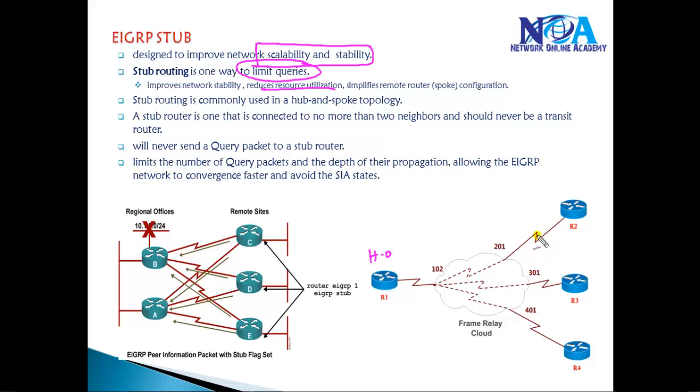This is more applicable in hub and spoke topology where you have frame relay or DMVPN implementations with branch offices. If the head office lost the best route, it should not send out a query to the branch offices.